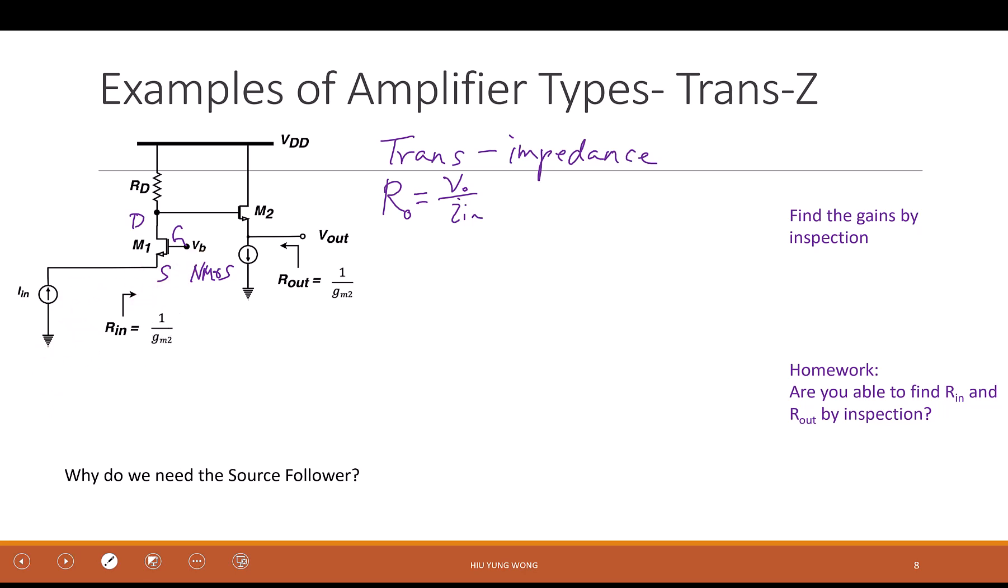Every time I show you, what do we have at the input? A voltage source, right? So every time we know that if you give me a voltage, I know what the gain is. But now you put a current. But it's still a common gate amplifier. You just put in the current. Okay? So we are going to understand how to work with this.